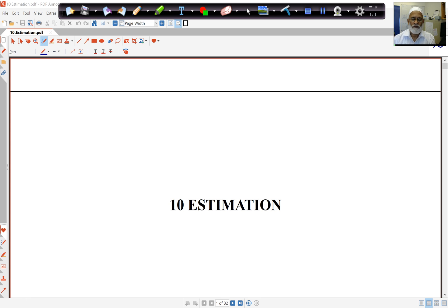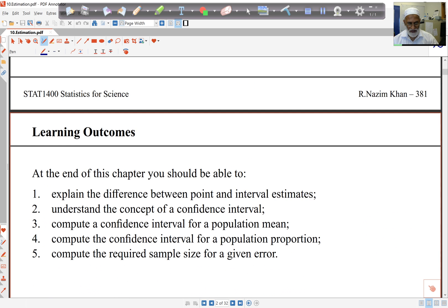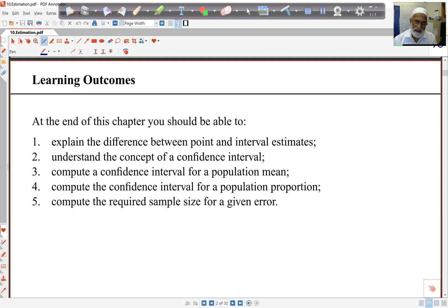Hello again. We're now looking at estimation in chapter 10. Estimation is about trying to obtain the value of population parameters based on samples. So all the work we did in the last chapter on sampling will be useful.